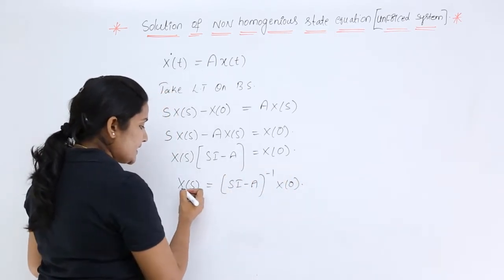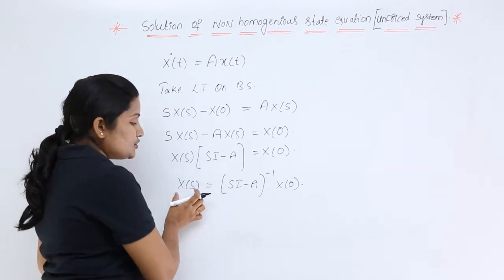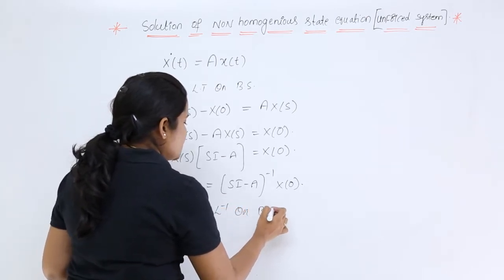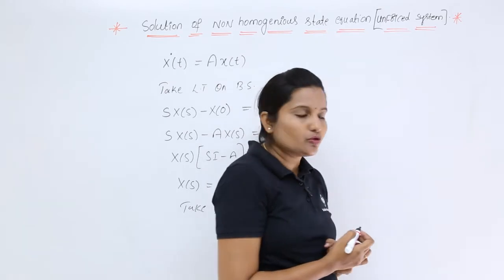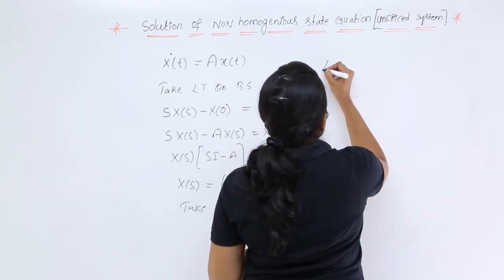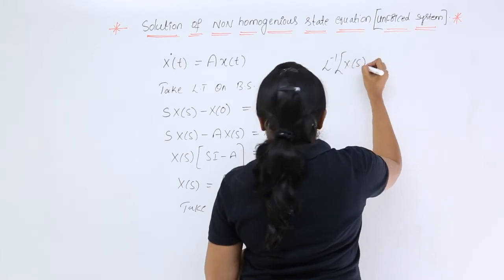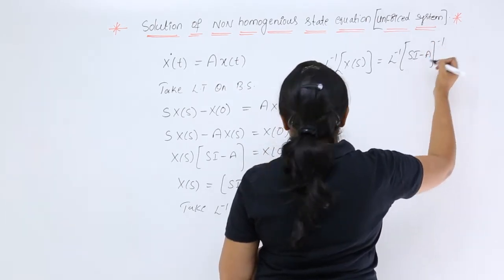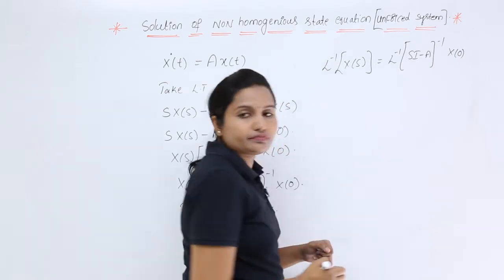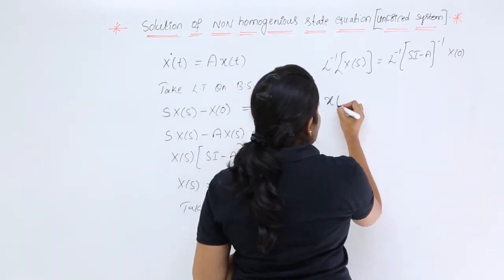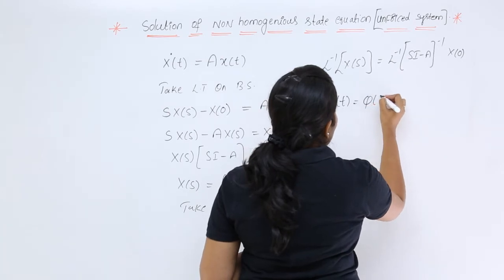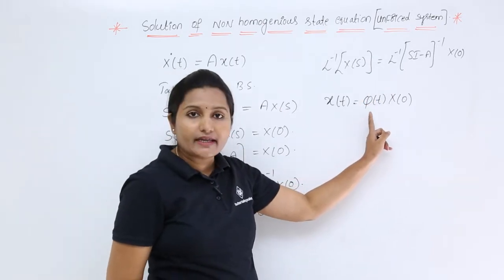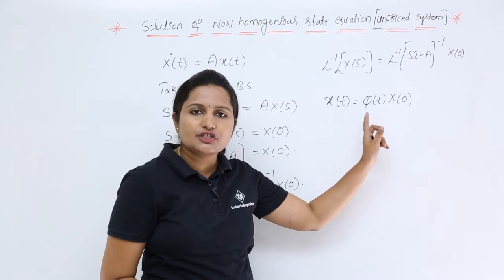Now to get x(t) from X(s), we take the inverse Laplace transform on both sides. The inverse Laplace transform of X(s) equals the inverse Laplace transform of (sI - A)^{-1} multiplied by x(0). This gives x(t) = φ(t)·x(0), where φ(t) is the state transition matrix.